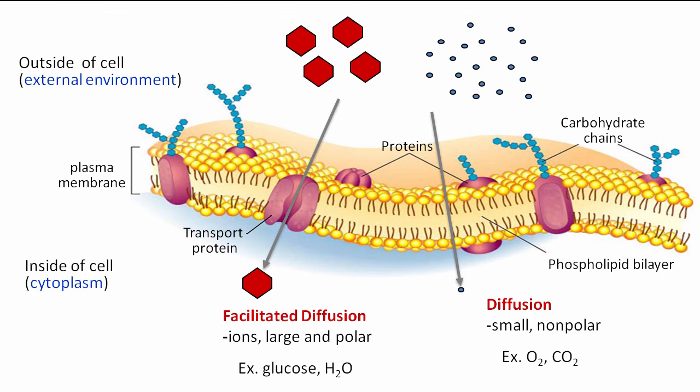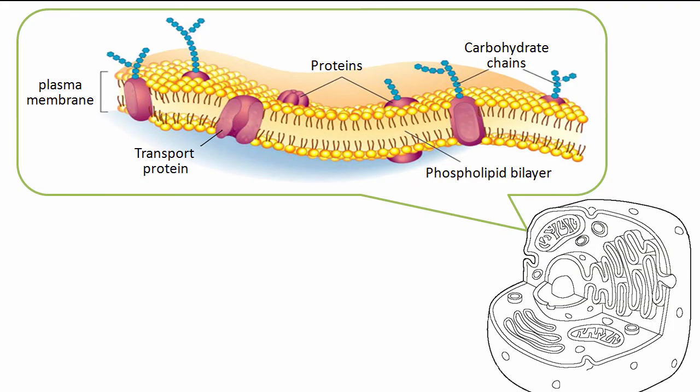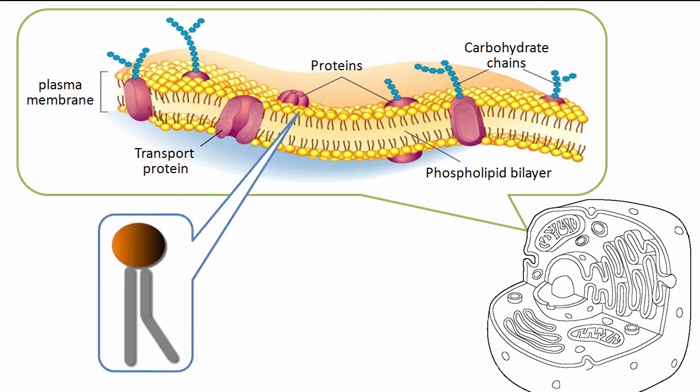So together, the phospholipids, transport proteins, and other membrane components form a rather responsive and dynamic perimeter for the cell. Membranes are flexible and fluid-like, rather than sheets of molecules simply locked together in a rigid structure. Most of the proteins drift around freely as if they were icebergs floating around in a sea of phospholipids.